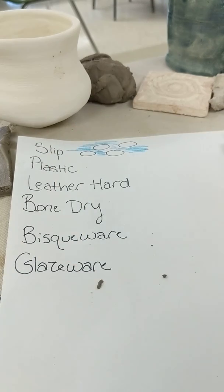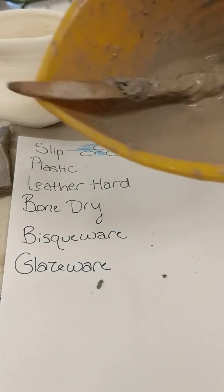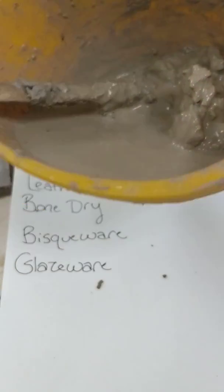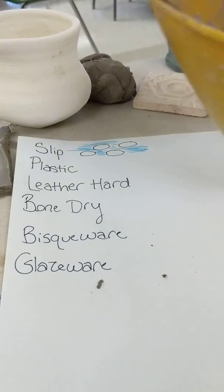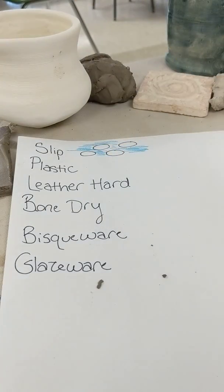Slip is kind of like a glue. We use it to hold two pieces together. You can also use it to make some crazy textures, but it's just watered down clay.